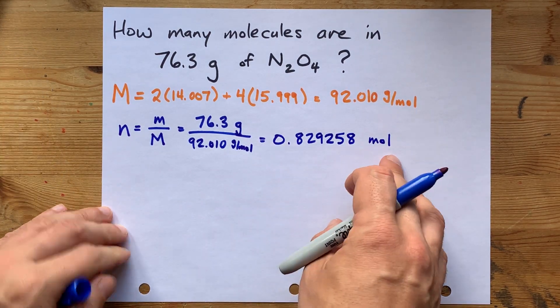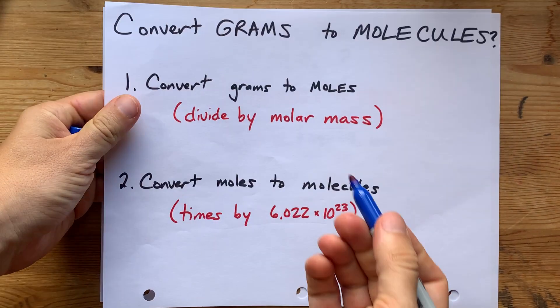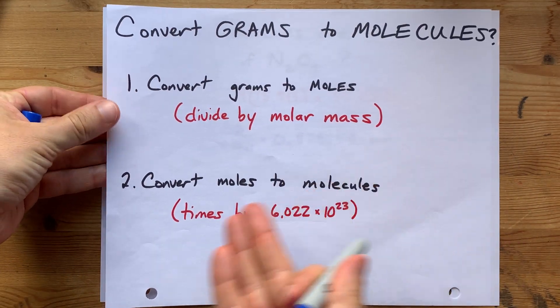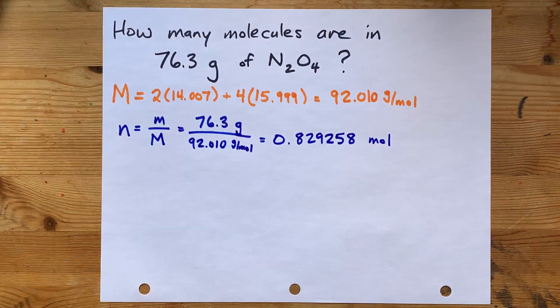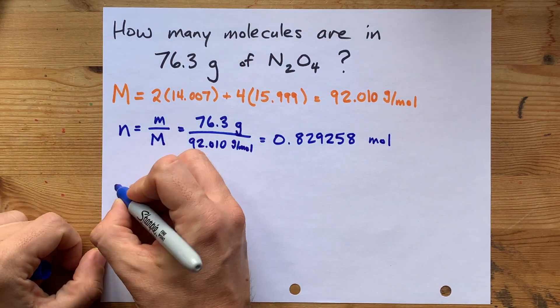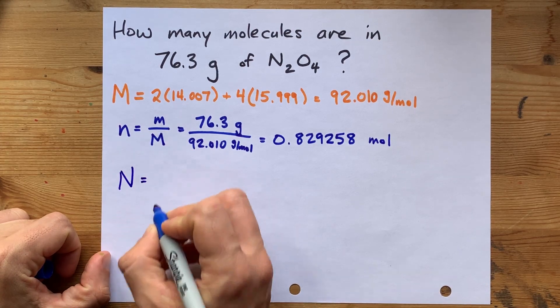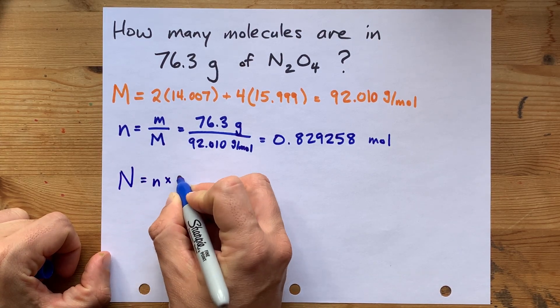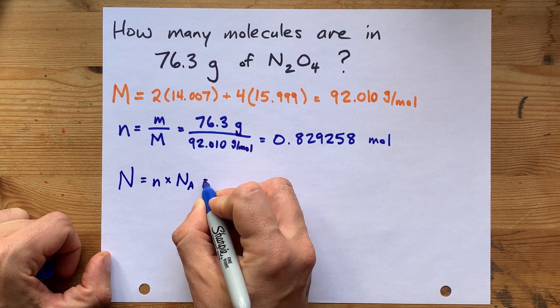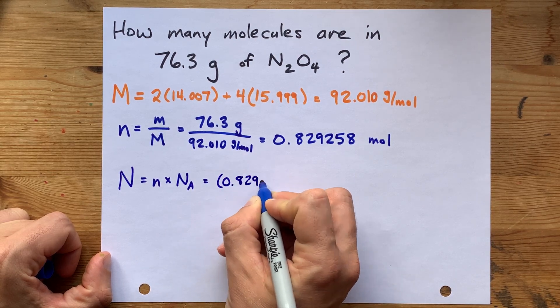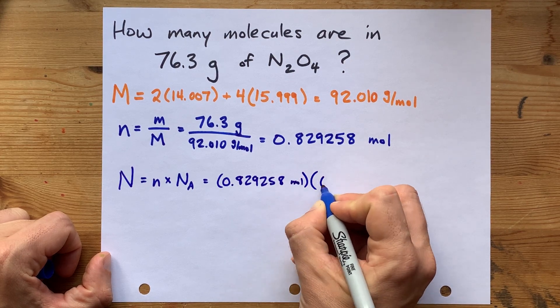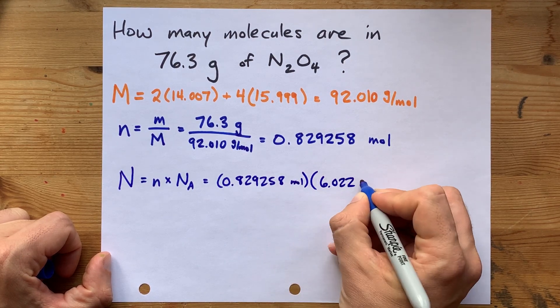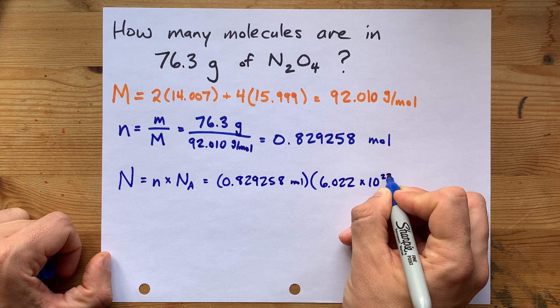What do you do with that? Well, I'm going to bring back my instructions, but eventually I need you to know this, right? Convert moles to molecules by timesing by Avogadro's number. The number of molecules is the number of moles times Avogadro's number. For us, that's 0.829258 moles. Avogadro's number is always the same, 6.022 times 10 to the power of 23.